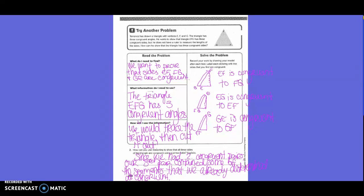And then GE is congruent to GF, and it was folded at G. That's what our dotted line is, that was the fold line. How can you use reasoning to show that all three sides of the triangle are congruent using just two folds? Explain. Since you have two congruent pairs, our third pair contains some of the segments that we already determined as congruent.